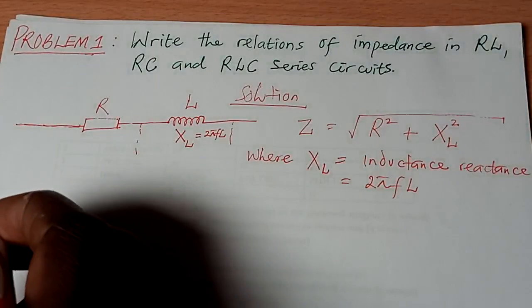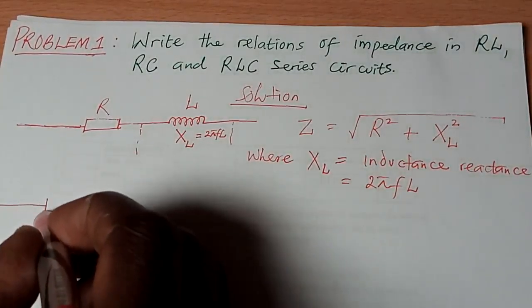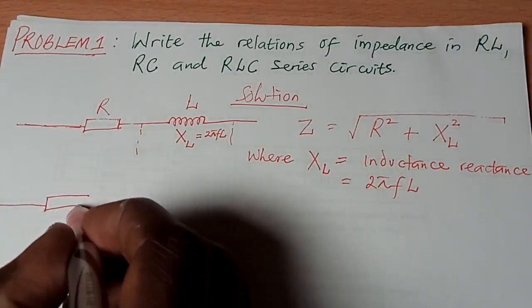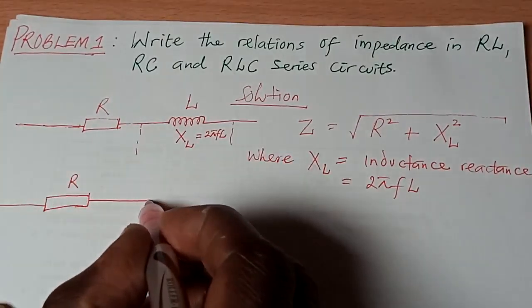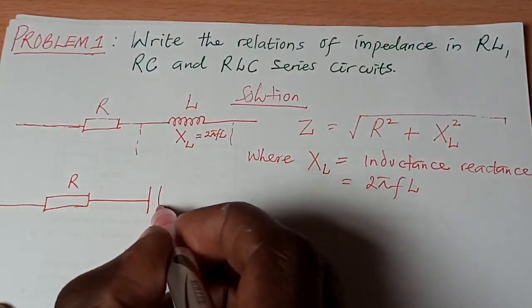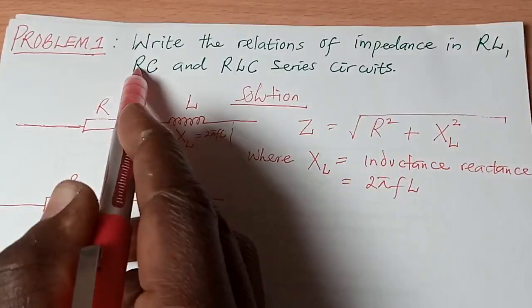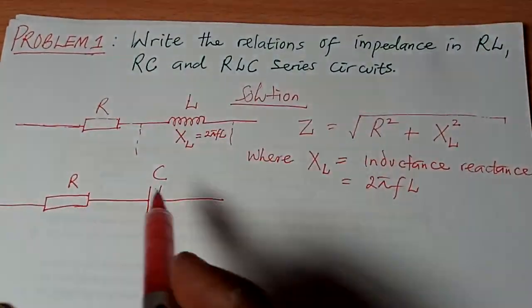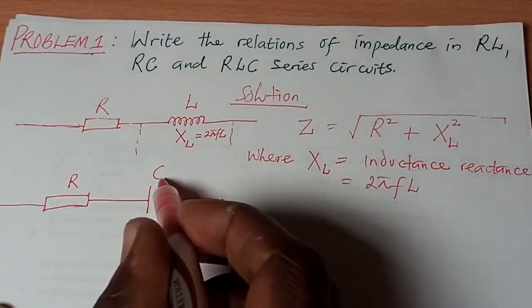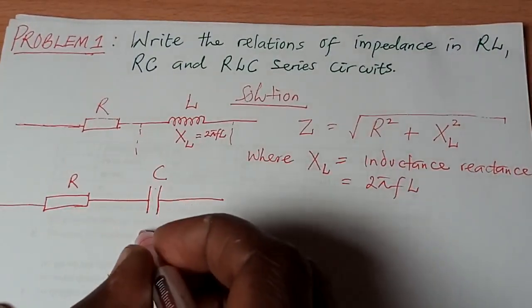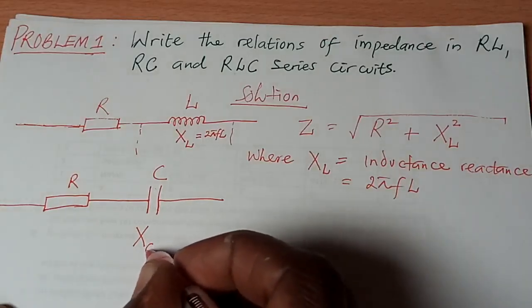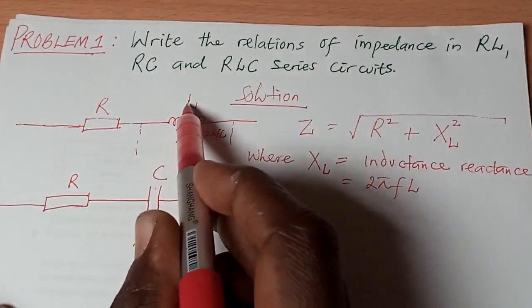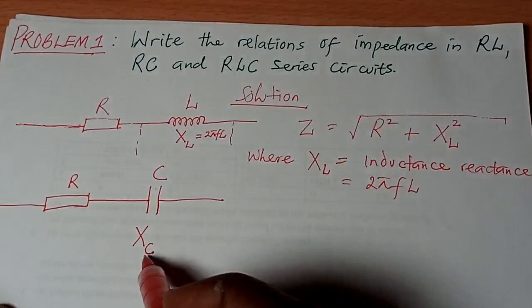Then you go to the RC circuit. In the RC circuit, you have a resistor. This is your resistor. And then you have a capacitor, a resistor and a capacitor in the circuit. The resistance of this capacitor is X sub C, and we call it capacitive reactance. And this one X sub L, this one X sub C.